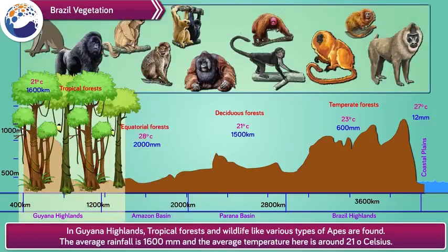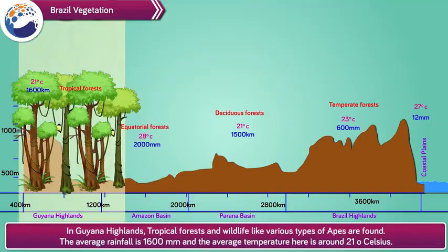In the Guyana Highlands, tropical forests and wildlife like various types of apes are found. The average rainfall is 1600 mm and the average temperature here is around 21 degrees Celsius.